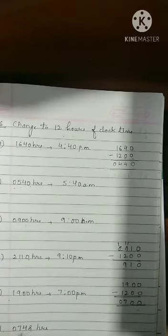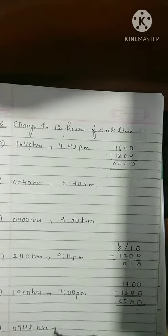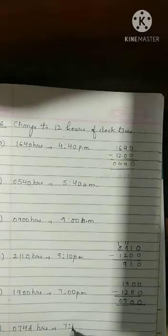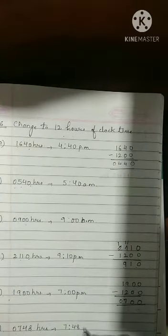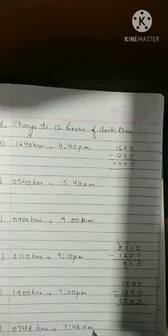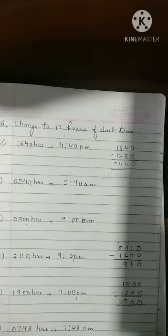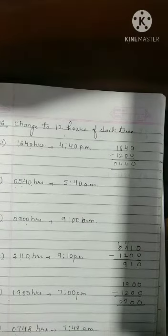Then 7:48 hours. 7 comes before 12. So 7:48 hours, what do we write? AM. Clear, everyone? Do not get confused. Hope it is clear to all everyone.